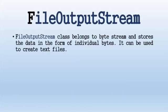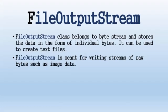FileOutputStream is used for writing data to a file. FileOutputStream belongs to byte stream and stores the data in the form of individual bytes. It can be used to create text files. FileOutputStream is meant for writing streams of raw bytes such as image data. For writing streams of characters, we might consider using FileWriter. The stream can create a file if it doesn't already exist before opening it for output.